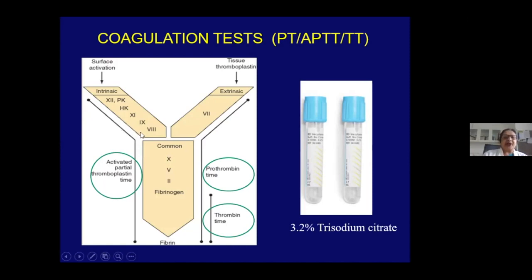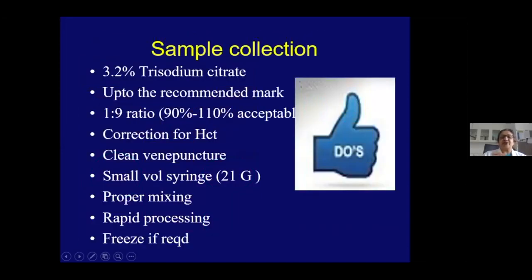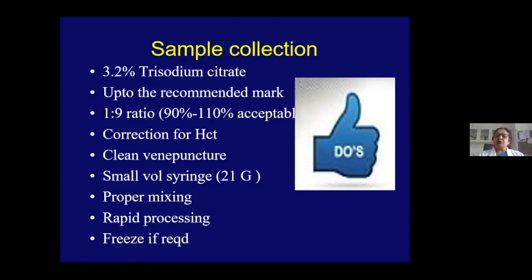Thrombin time covers from fibrinogen conversion to fibrin formation. Pre-analytical errors can alter test results and give false interpretations, so it is important to use trisodium citrate as anticoagulant. The tube has a mark indicating the 1:9 ratio, and the sample must be filled up to that mark. If only half the tube is filled, the ratio of citrate to blood is altered and will give false results.